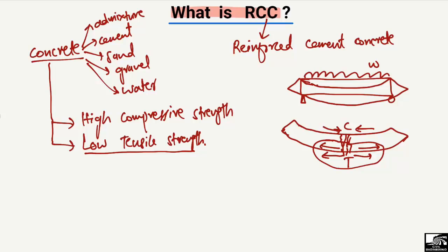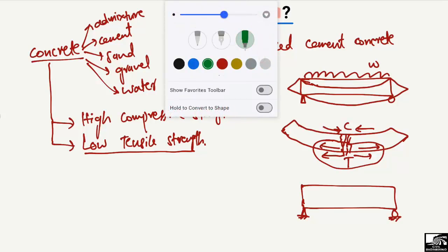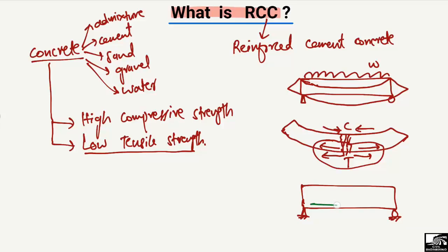Now, consider the beam again with its supports. What we do here is we provide a steel bar — reinforcement — at the bottom of the beam. This steel bar is provided in order to enhance the tensile strength of the concrete, or we can say the tensile strength of the whole beam. This steel bar is responsible for the tension part.